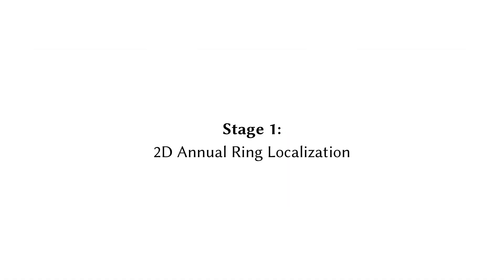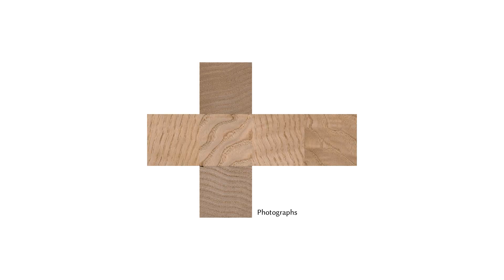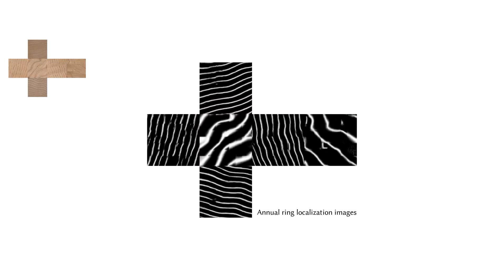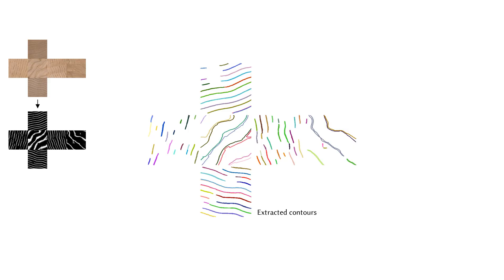In the first stage, our goal is to localize the annual rings on the 2D faces of a sample. We take the external photographs as input and translate them into annual ring localization images using a network trained on a portion of the Mokume dataset. Finally, we extract contours from the generated localization images.